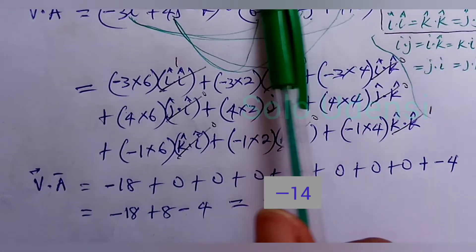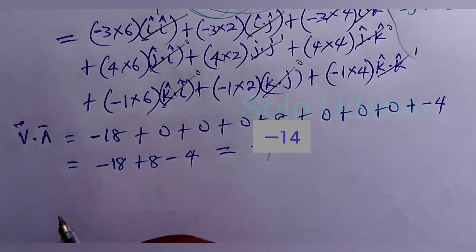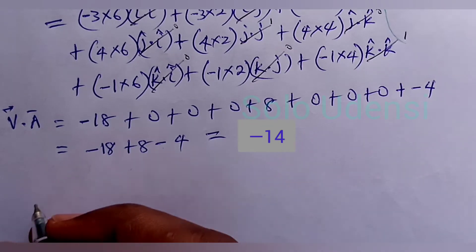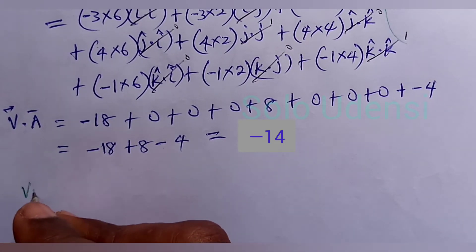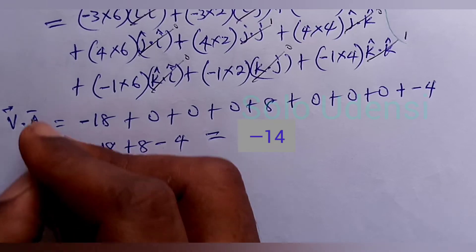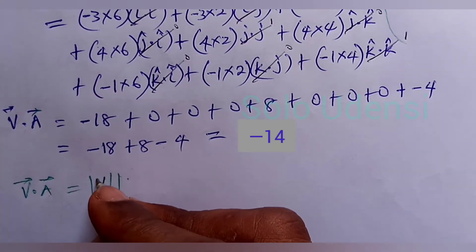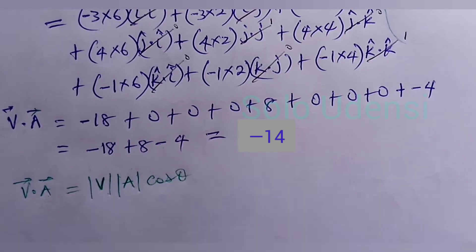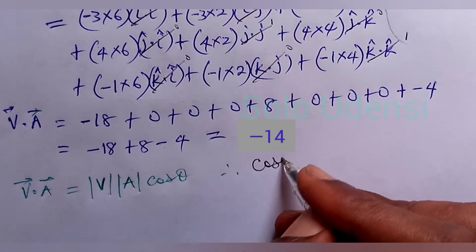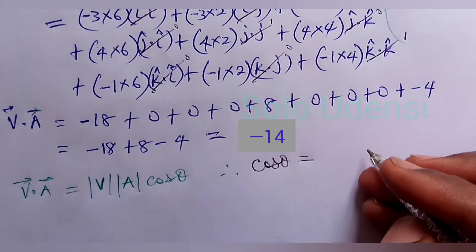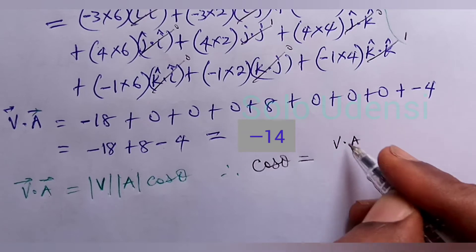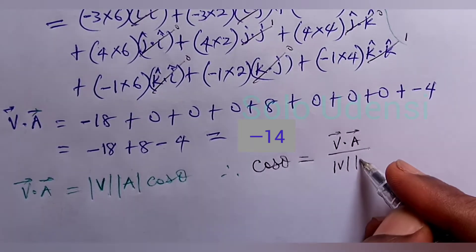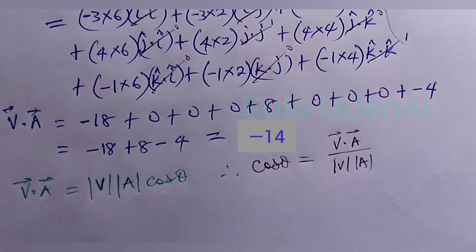Now let us find the angle between the two vectors. The relationship is: V dot A equals the magnitude of V times the magnitude of A times cos θ. Therefore, cos θ equals V dot A divided by the magnitude of V times the magnitude of A.